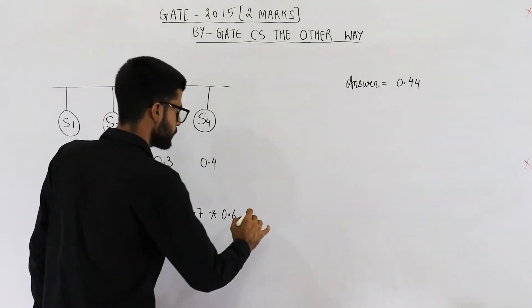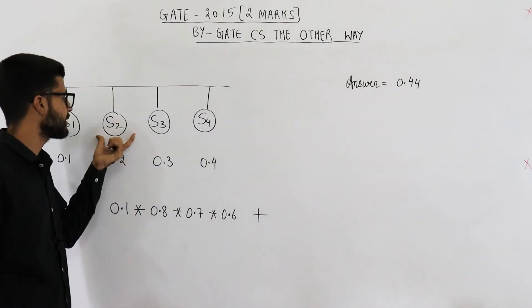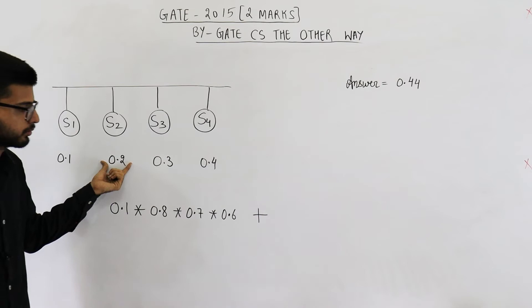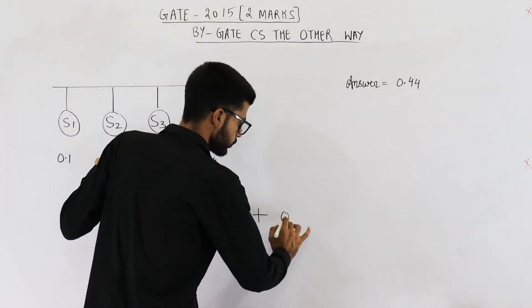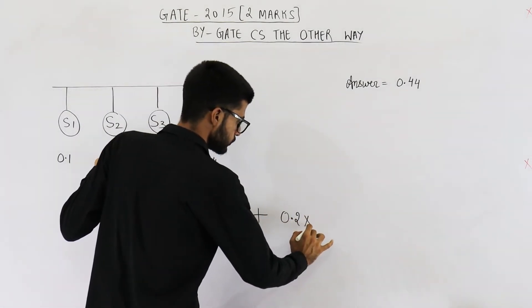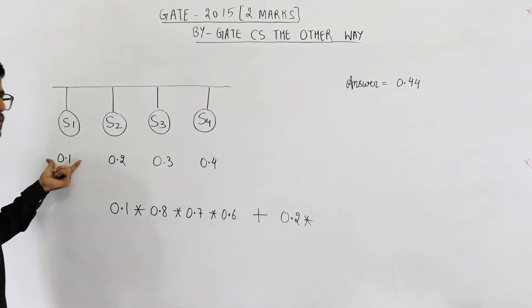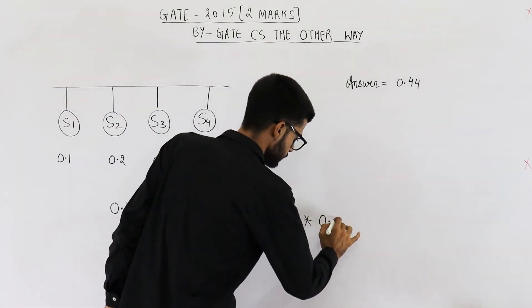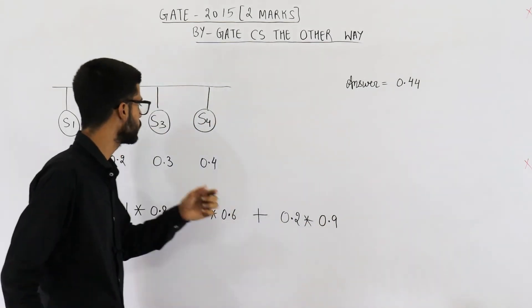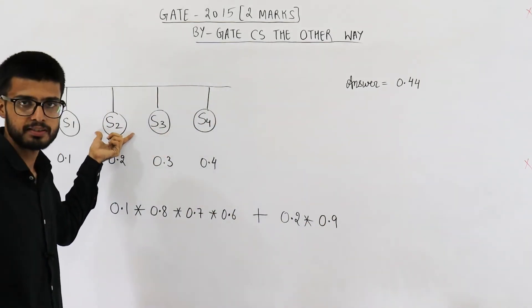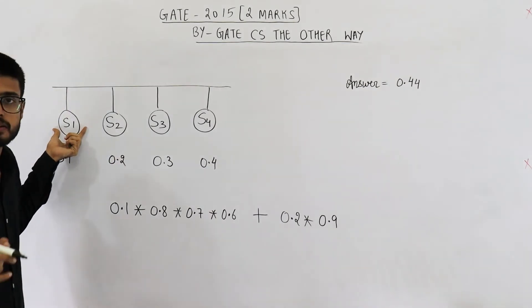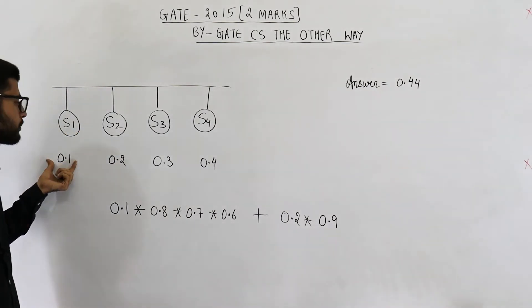Now another possibility is only S2 is sending data. That means 0.2 into 1 minus 0.1 that is 0.9. Because in this case we want only S2 must send data, so its probability is 0.2. S1 must not send data, that means 1 minus 0.1.